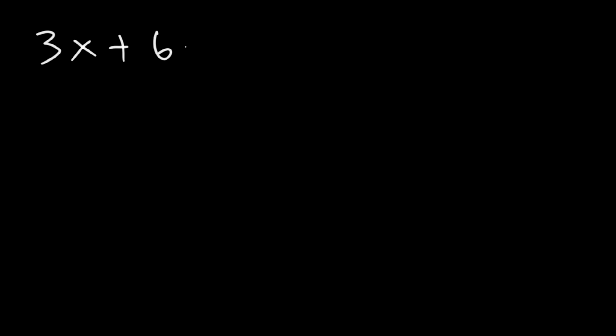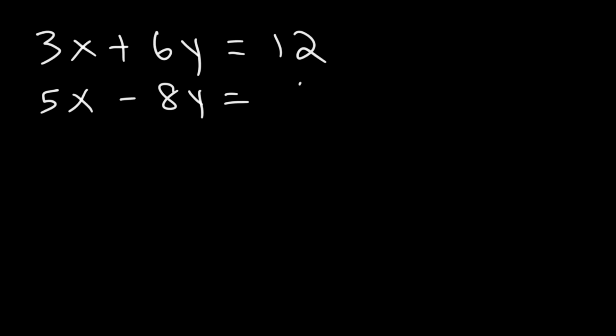Let's say we have a problem that looks like this: 3x plus 6y is equal to 12, and 5x minus 8y is equal to 2. How do we solve a linear system that looks like this? How do we get the values for x and y, using the substitution method?